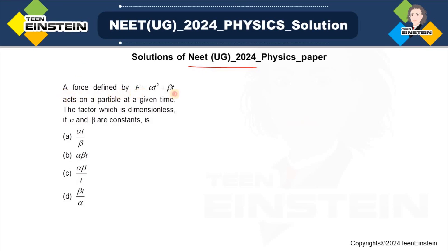A force defined by F is equal to alpha T squared plus beta T acts on a particle at a given time. The factor which is dimensionless if alpha and beta are constants, then which among these four expressions will be dimensionless?